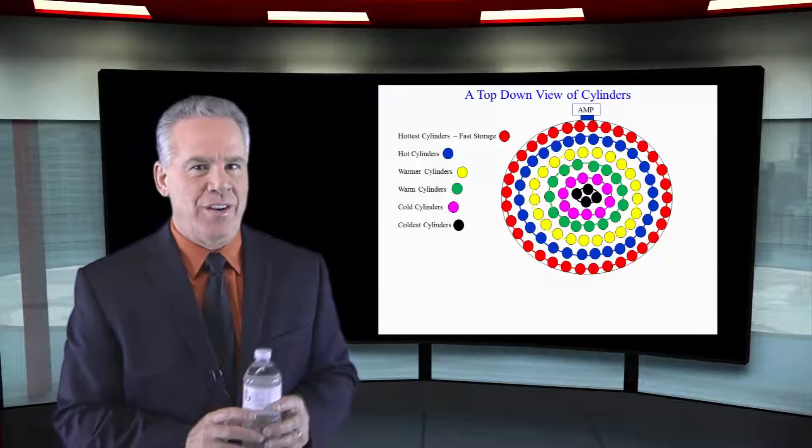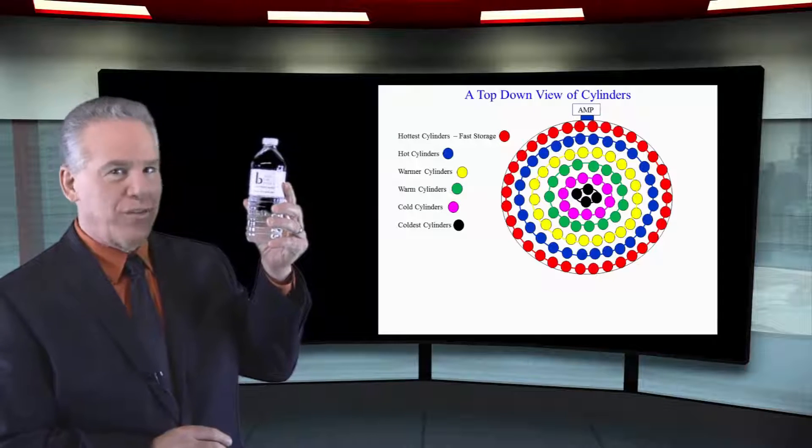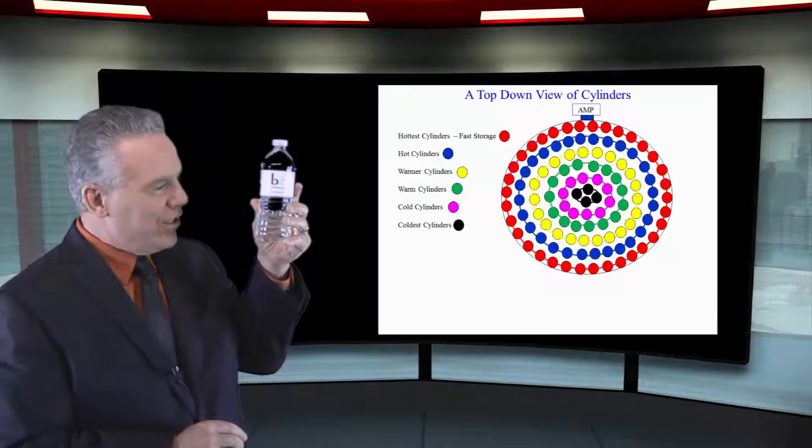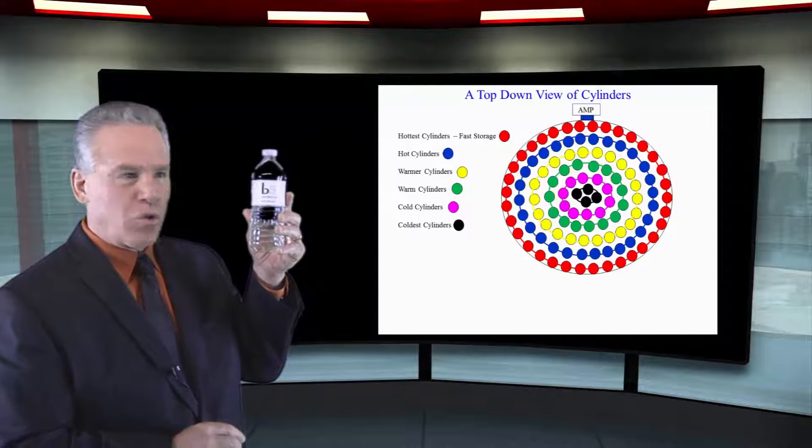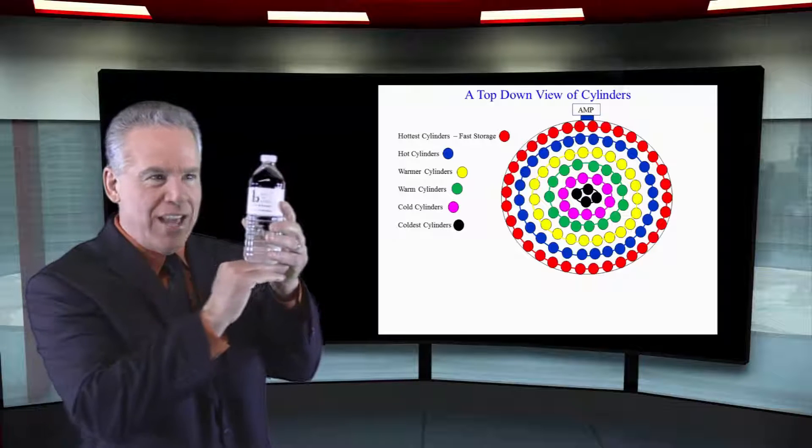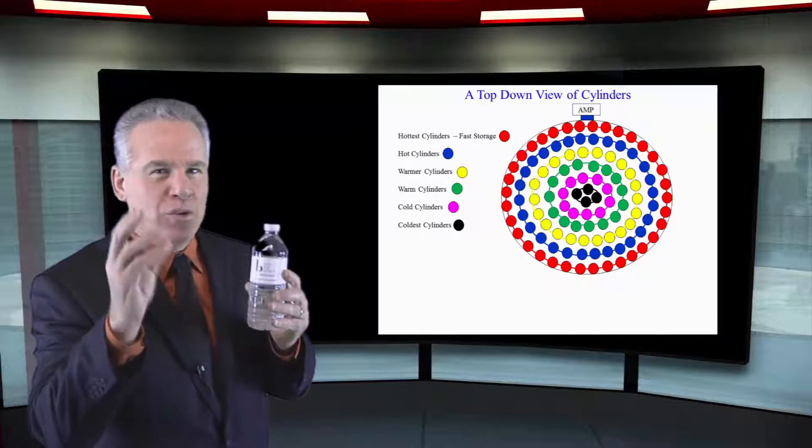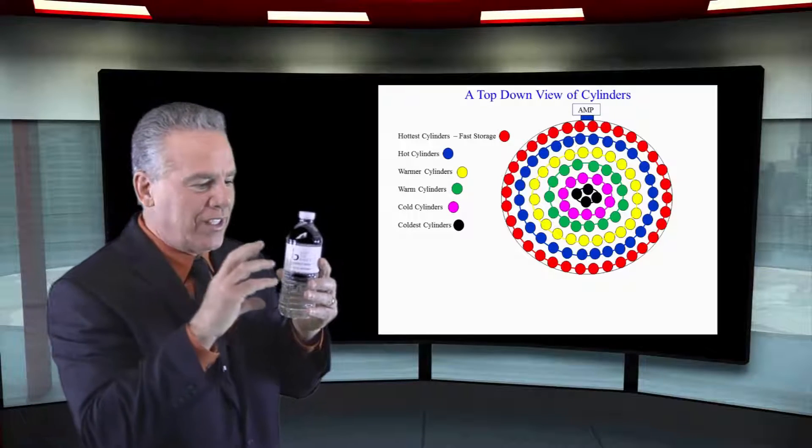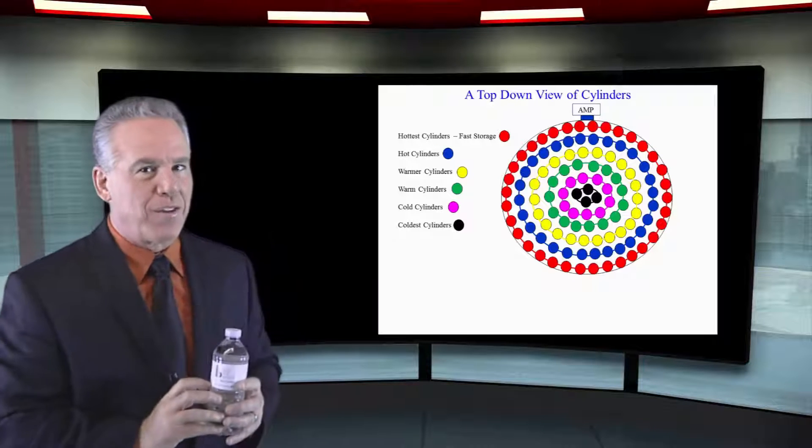Inside the amp's disk are a series of cylinders. This is where all data blocks are stored and there are thousands of these cylinders that just spin and spin and the amp using its master index knows exactly which cylinder to pull the data in from.